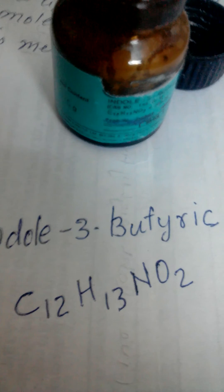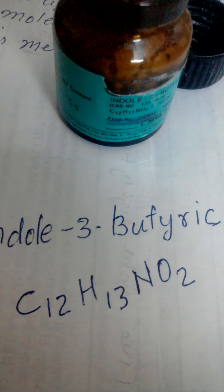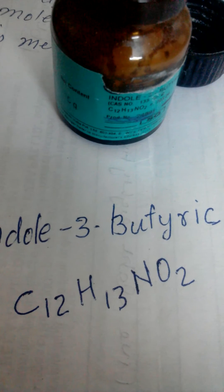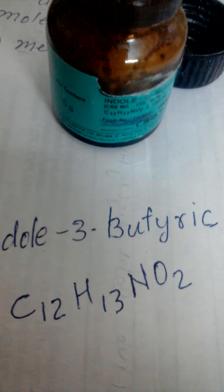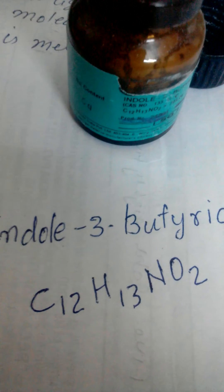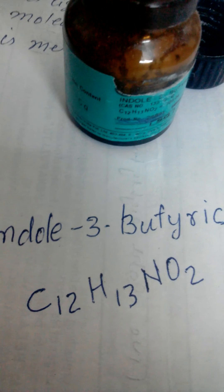Now mix 5 grams IBA, or IBA is known as indole-3-butyric acid, in alcohol. Alcohol is used because IBA and indole-3-butyric acid does not dissolve in water or any other element.